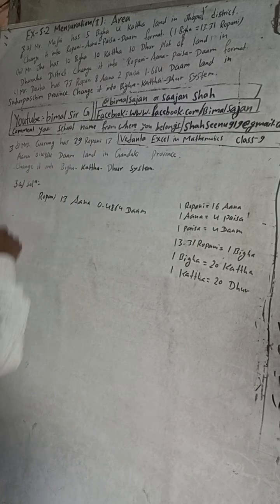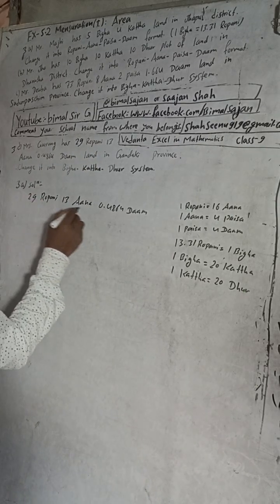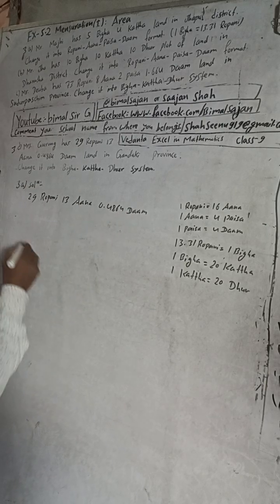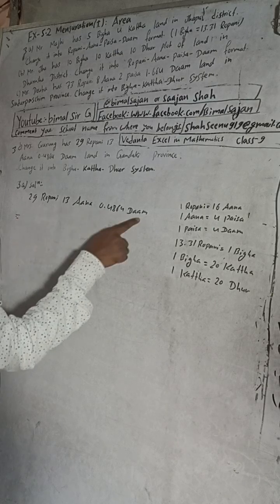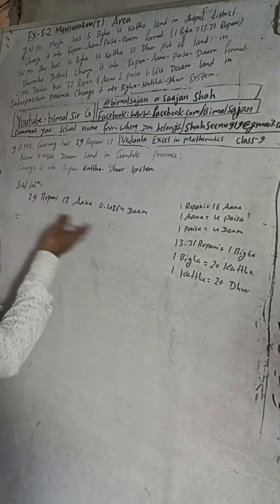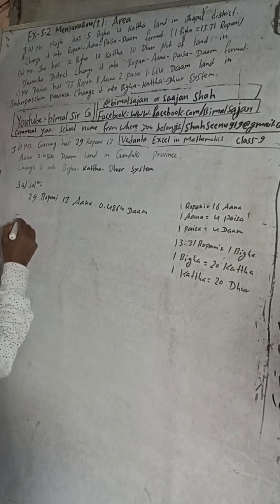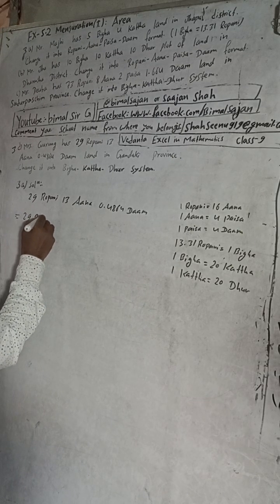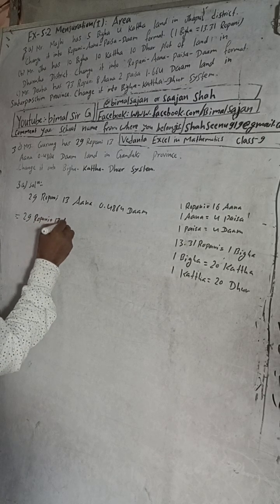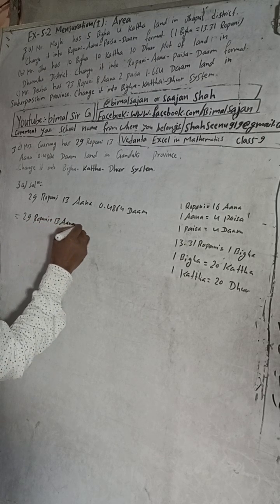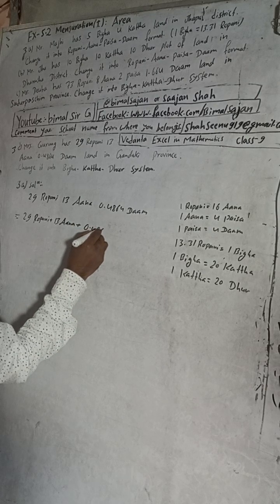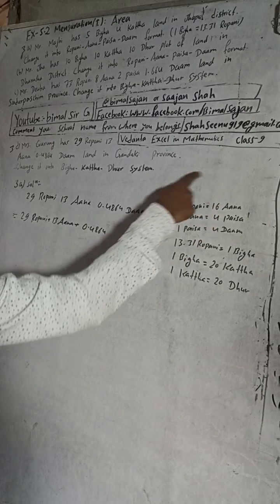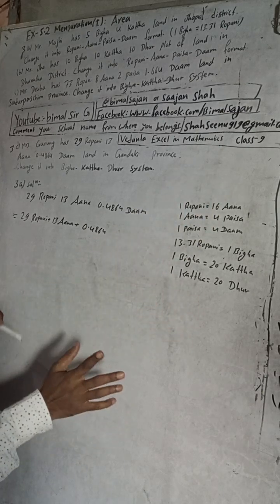So this is 29 Ropuni, 13 Ana, 0.4864 Dham. Now we have to convert all these into first Ropuni and then convert that into Vega. So now 29 Ropuni as it is, plus 13 Ana, plus 0.4864.